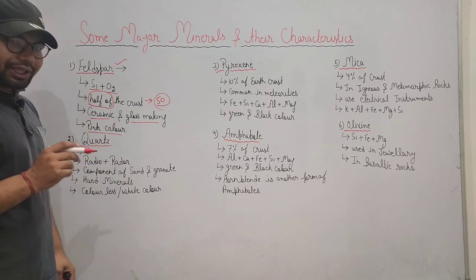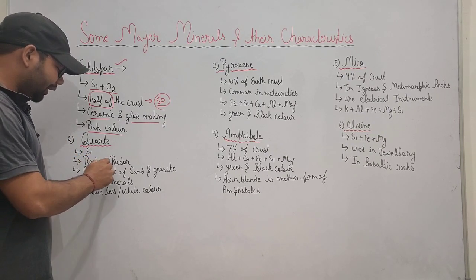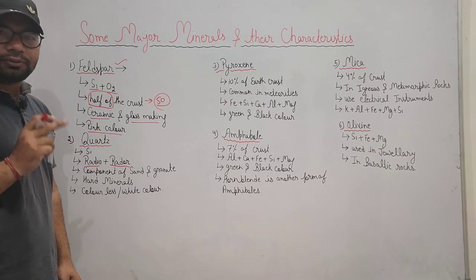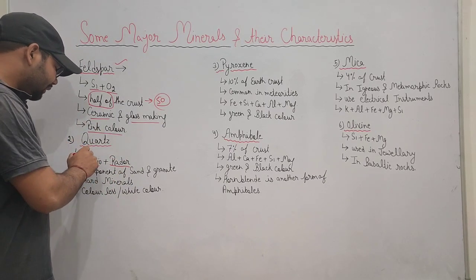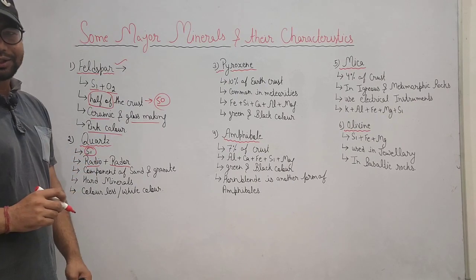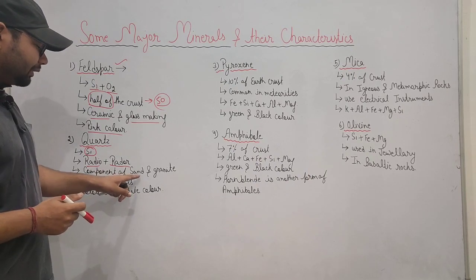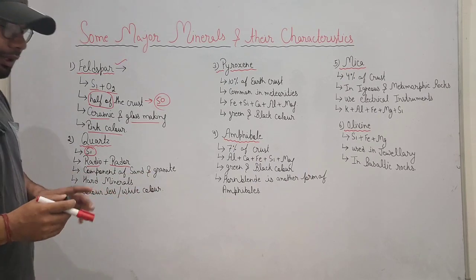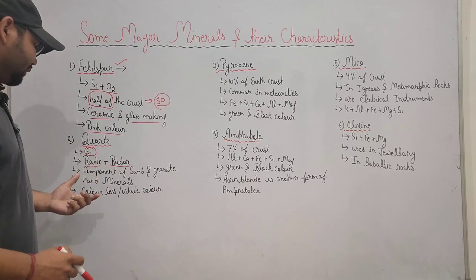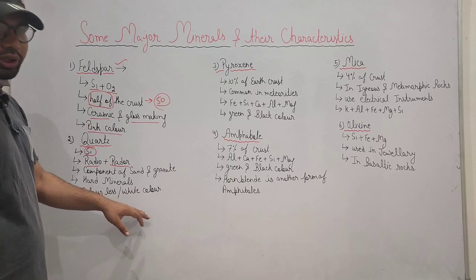This is used in radio and radar. What is used in this? Silica. It is a component of granite and this is a type of hard mineral and this is a type of colorless or white mineral.